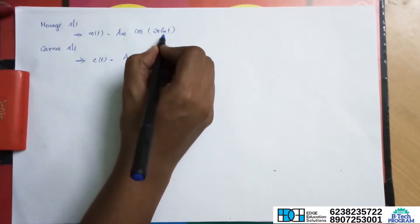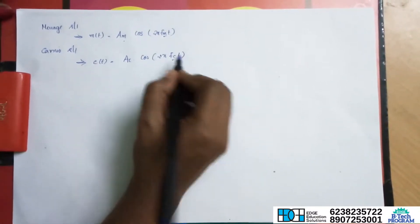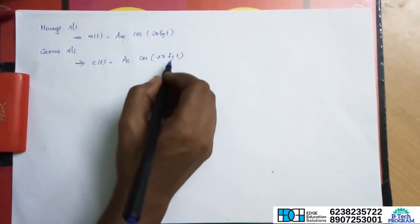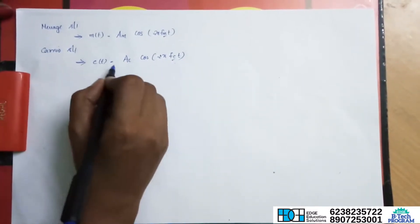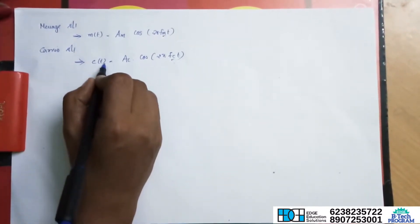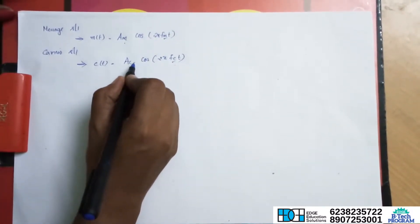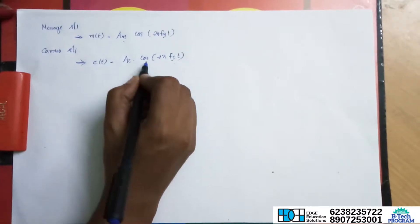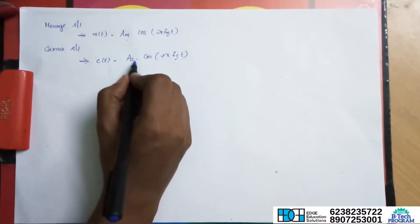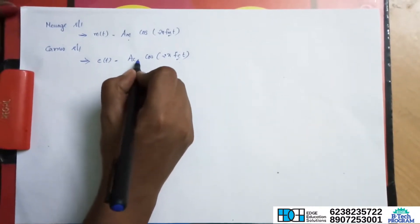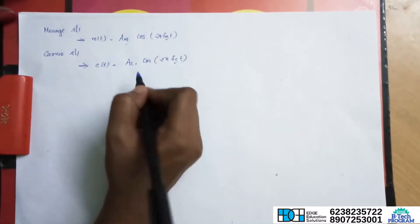fm is equal to the modulating frequency. fc is equal to the carrier frequency. The total carrier signal c of t is equal to Ac cos 2 pi fc t, where Ac is the carrier signal amplitude.